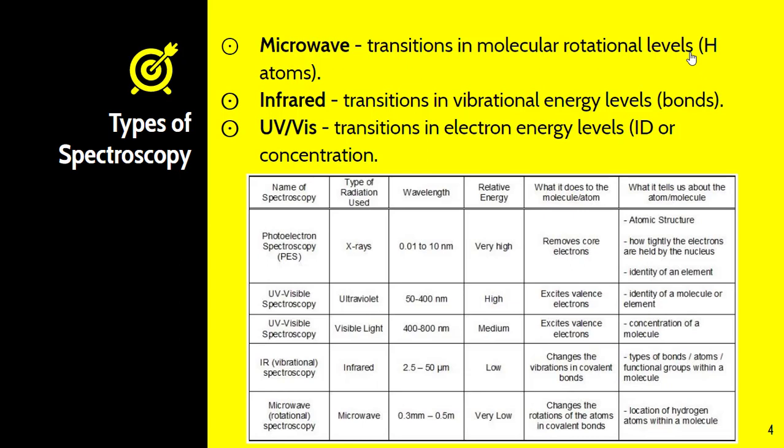The three others we want you to know are microwave, which are transitions in the molecular rotational levels and help us determine where hydrogen atoms are located or how many are in a compound. Infrared refers to transitions in vibrational energy, which lets us know what types of bonds are present. And UV-vis, which involves transitions in electron energy levels and allows us to determine the identification of a molecule or the concentration.